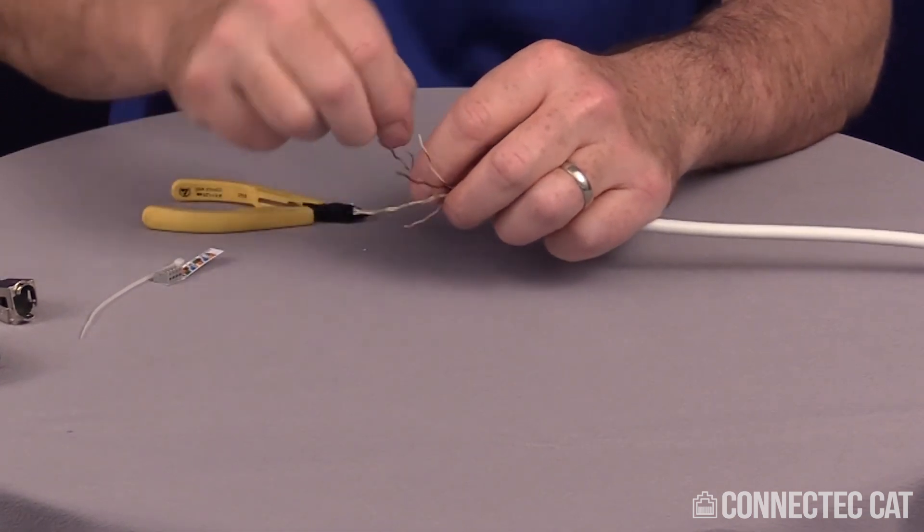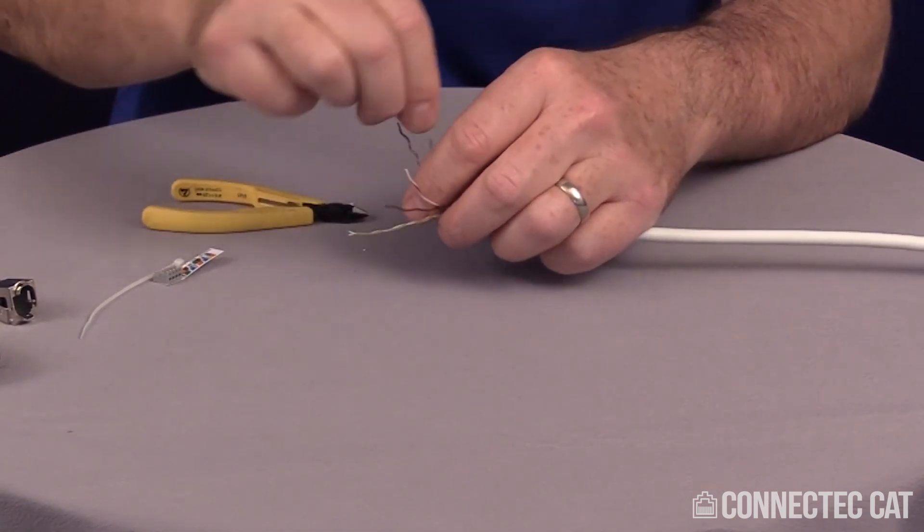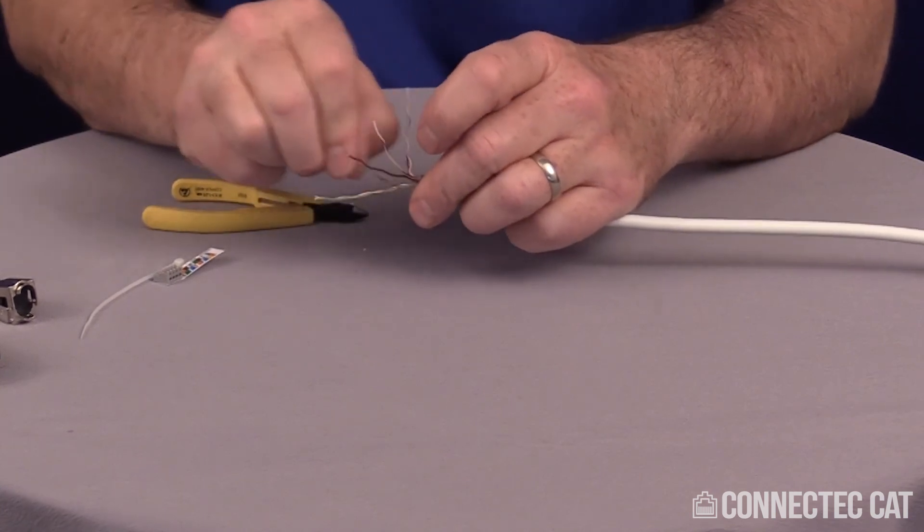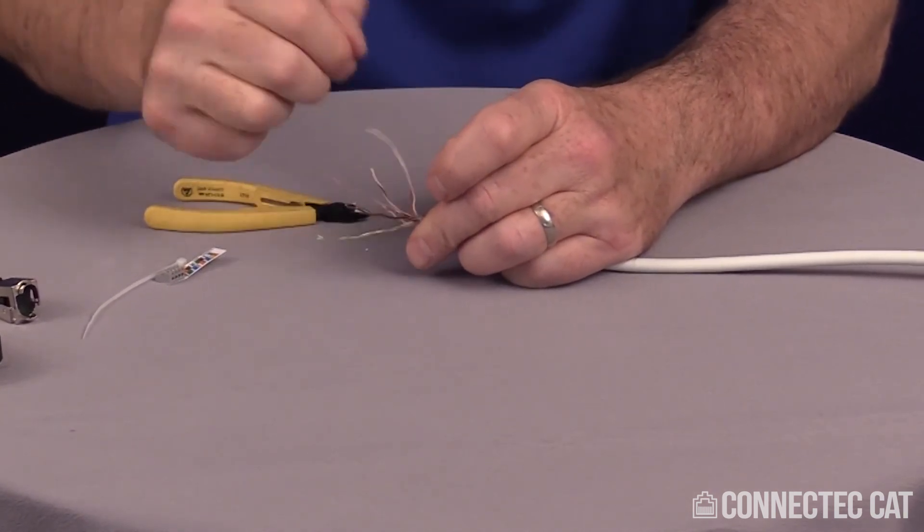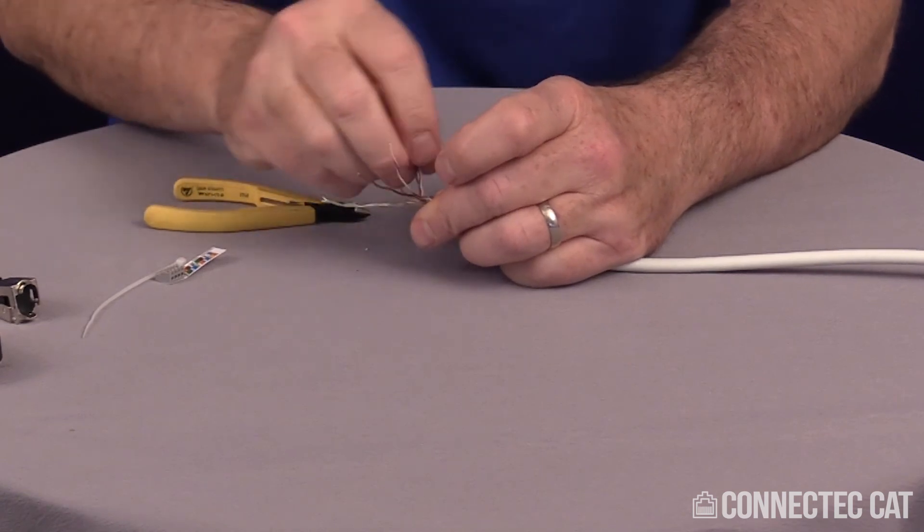You'll notice the color coding on this particular cable is a little dim. The reason why is this is a plenum rated cable and it's made out of Teflon. Teflon does not accept color very well. Once I get these all lined up, I'm going to take my load bar.